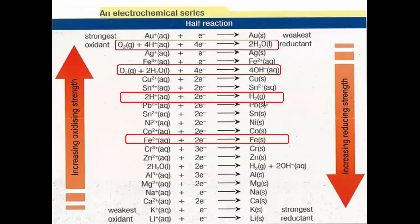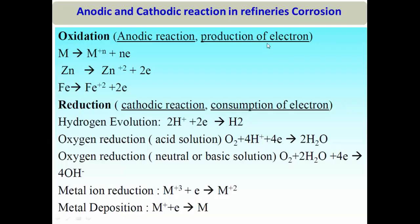In a refinery, three types of cathodic reactions commonly occur: in acidic medium, H⁺ ions consume electrons and form H₂ gas; in neutral medium, dissolved oxygen consumes electrons and water; and in acidic medium containing oxygen, both reactions can occur simultaneously. These cathodic reactions drive corrosion of iron, steel, copper-nickel, or other materials acting as the anode.